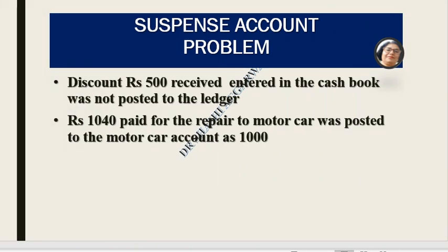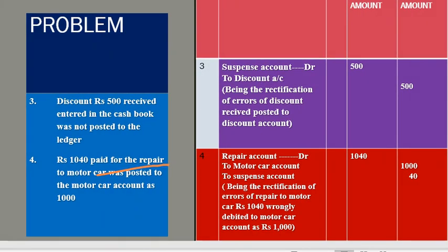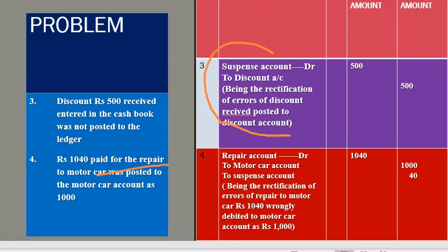For Error 3: Rs. 500 discount received was entered correctly in the cash book but was not posted to the ledger. Since discount received should be credited, and it was not posted, we rectify by crediting the discount account with Rs. 500. The suspense account is debited by Rs. 500, being the rectification of the error of discount received not posted to the discount account.